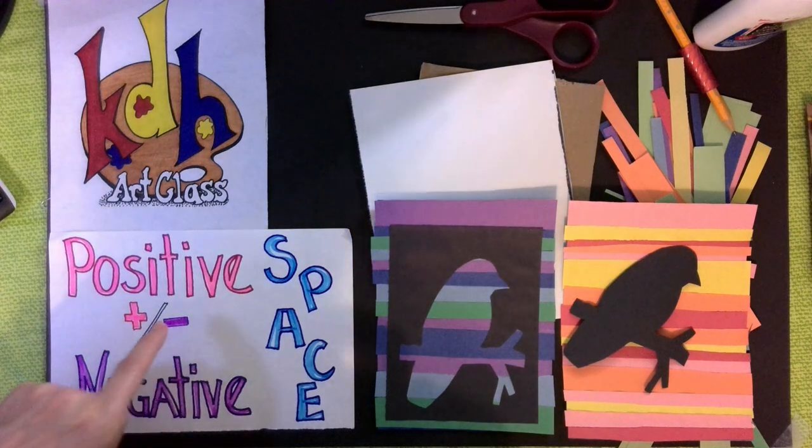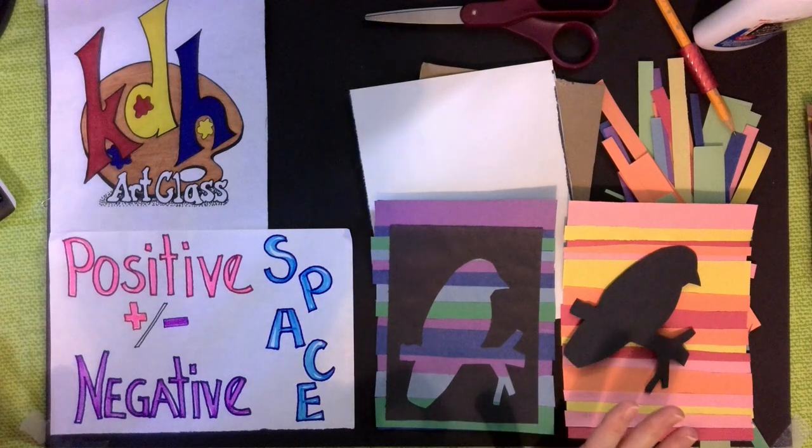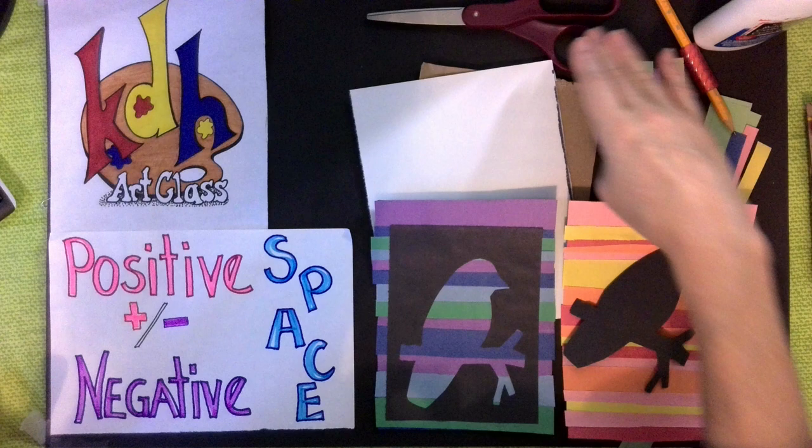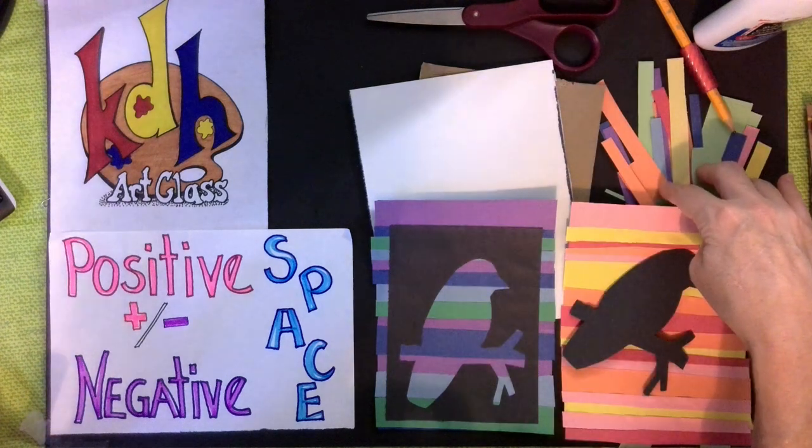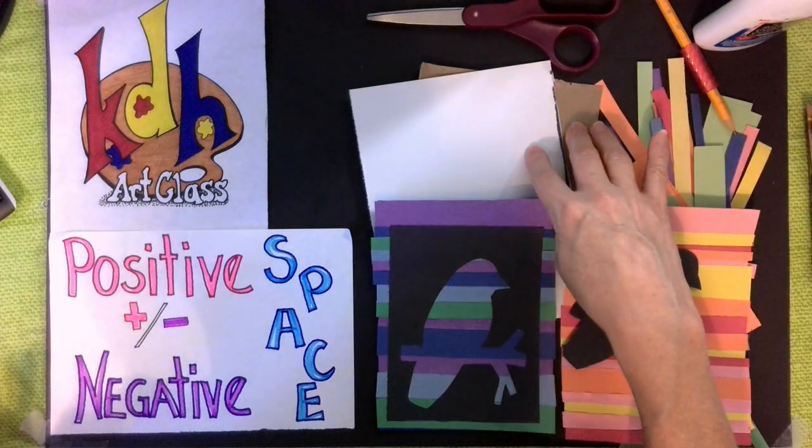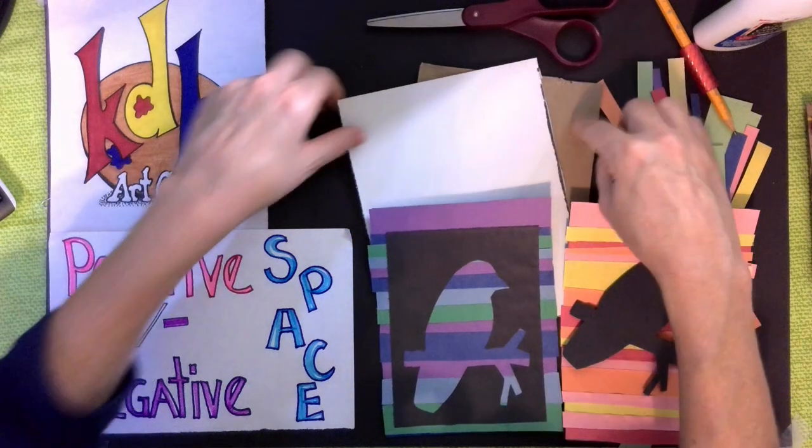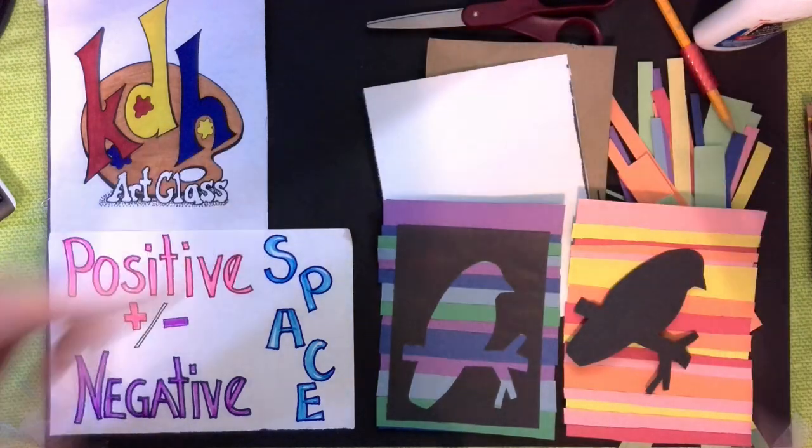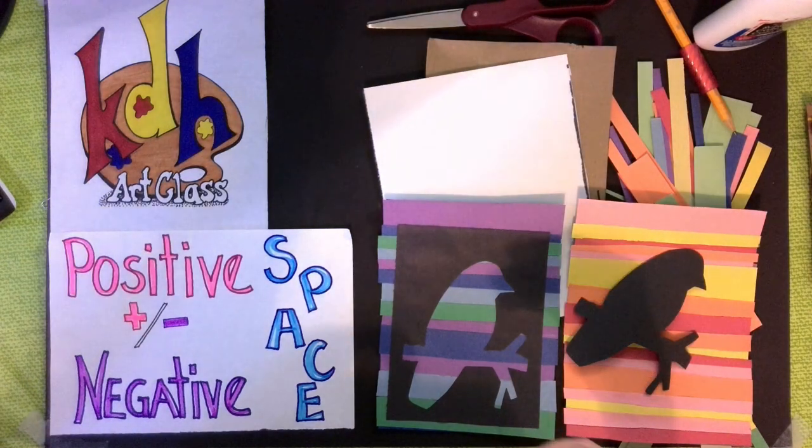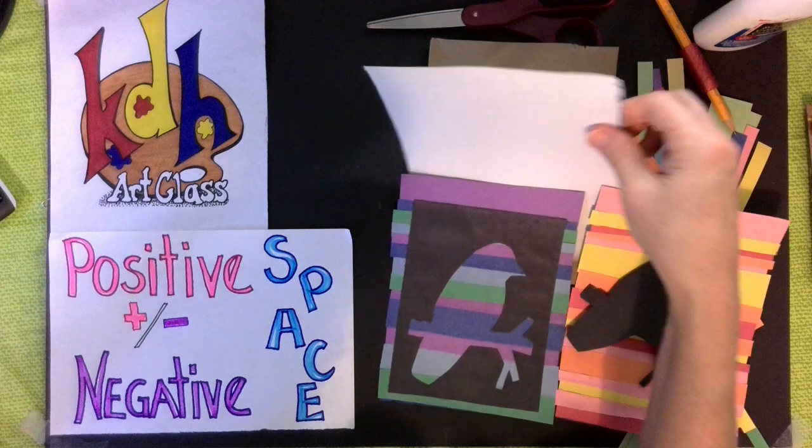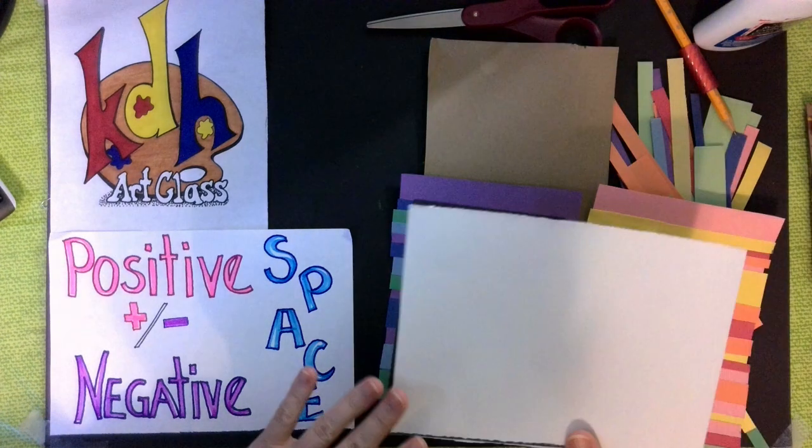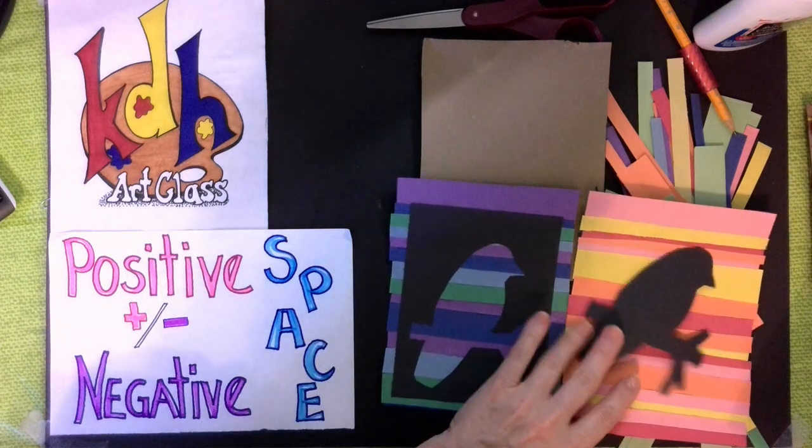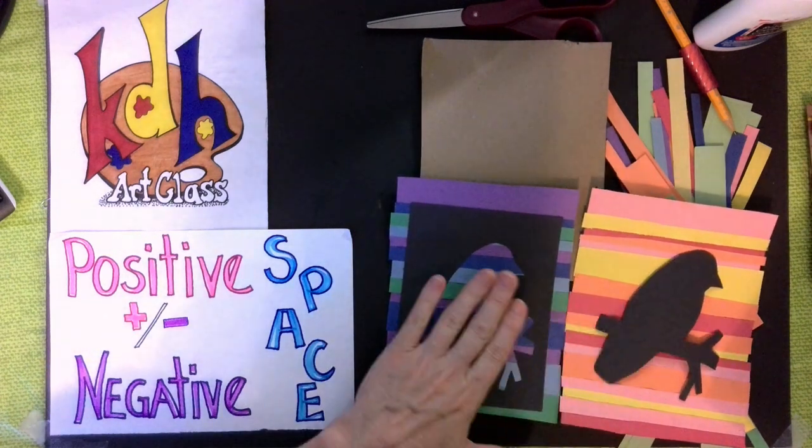We're going to be using glue, scissors, construction paper cut into strips. We're going to need something sturdy to attach it to—cereal box has been my favorite go-to thing lately. Then you're going to need a piece of construction paper to be your focus, which is what we're going to focus on for our positive and negative space.